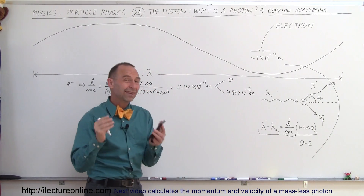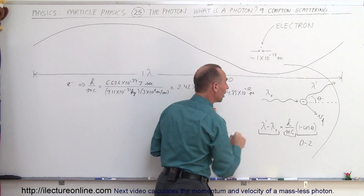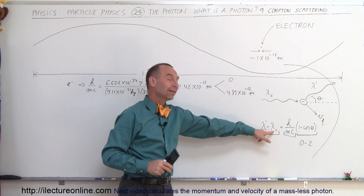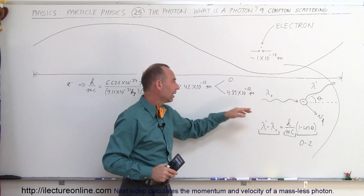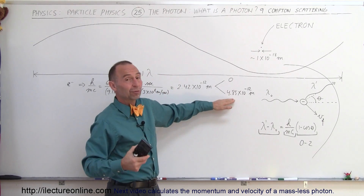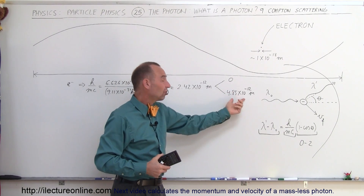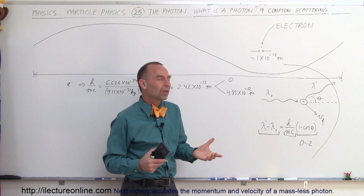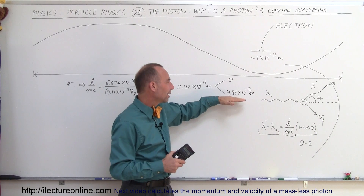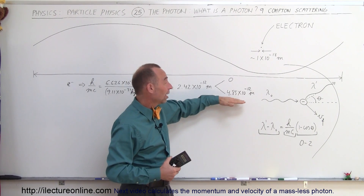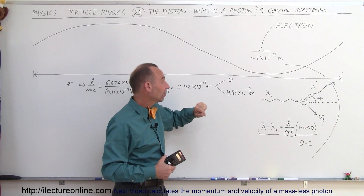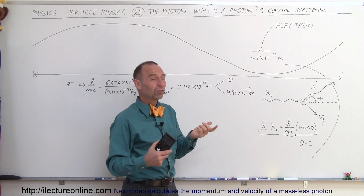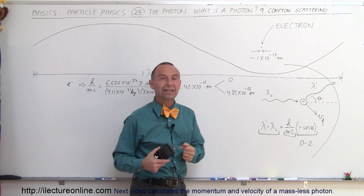Since this change in wavelength does not depend on the incoming photon's wavelength, if the incoming photon has a very large wavelength — say, visible light at 500 times 10 to the minus 9 meters — this change would be so minuscule compared to that wavelength that we could not measure the effect. We can only measure Compton scattering with photons comparable in size, such as x-ray photons which may be 100 to 500 picometers in wavelength. For visible light wavelengths, there is no practically measurable effect from Compton scattering.